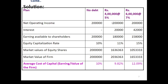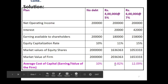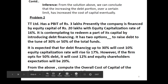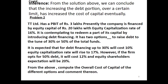We can observe that 4 lakh rupees at the rate of 5% — this debt combination is the optimum debt. With 4 lakh debt and the remaining amount as equity, and an 11% cost of equity, this represents the optimum capital structure. The inference from the solution: we can conclude that increasing the debt portion beyond a certain limit increases the overall cost of capital.